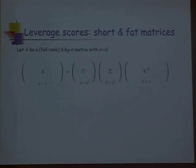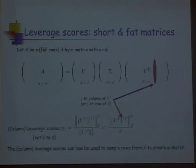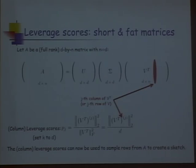The symmetric case: A is D by N, with D much smaller than N — a short and fat matrix. Assuming full rank, U is a rotation, Σ is diagonal with all entries strictly positive, and V^T is where the action happens. The rows of V^T are pairwise orthogonal and normal. The Euclidean norms squared of the columns of V^T are what you use as sampling probabilities. This could be the design matrix in an under-constrained least squares problem. K is set to D, the rank of the matrix.